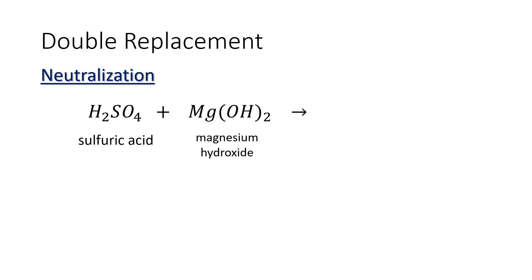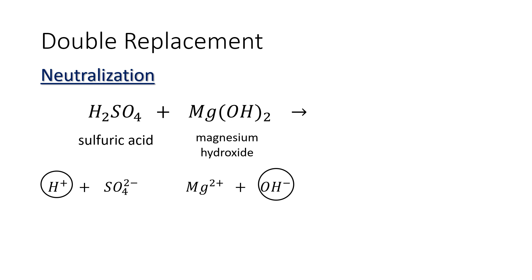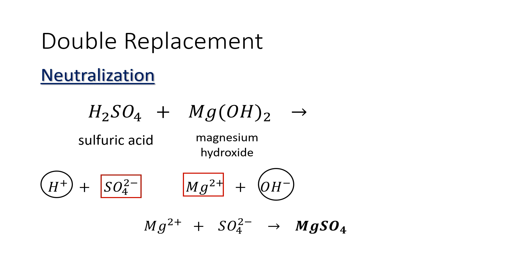For our last example of double replacement reaction and neutralization, we have the reaction between sulfuric acid and magnesium hydroxide. Sulfuric acid is formed by the combination of hydrogen and the polyatomic anion sulfate. So hydrogen will combine with hydroxide, and the cation magnesium will combine with the polyatomic anion sulfate. So magnesium and sulfate will form a compound called magnesium sulfate.